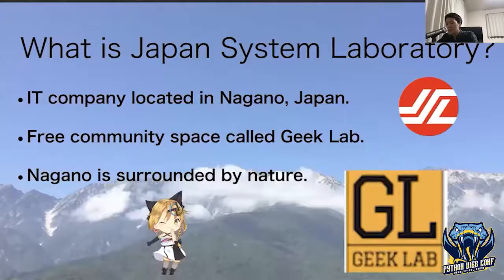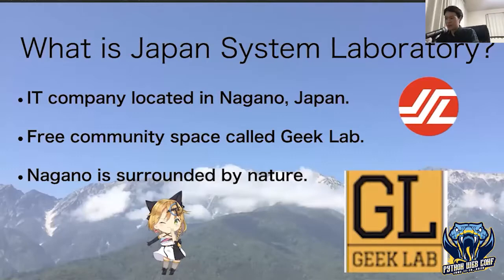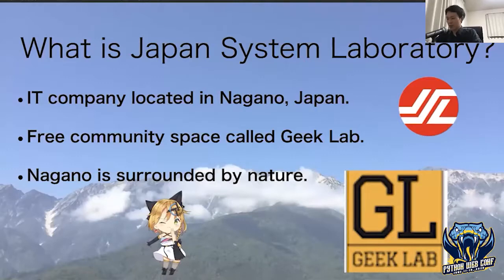I explain about my company. What is Japan System Laboratory? I call my company JSL. JSL is an IT company located in Nagano Prefecture in Japan. My company provides a free community space called Geek Labo. Nagano is a very nice place surrounded by nature, so if you come to Nagano, please come to Geek Labo.